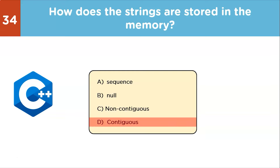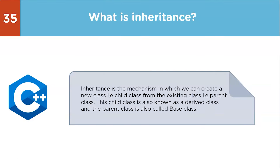Next question: what is inheritance? Inheritance is the mechanism in which we create a new class (child class) from an existing class (parent class). The child class is also known as the derived class and the parent class is also called the base class. In inheritance, the child class inherits properties and behavior from its parent class.